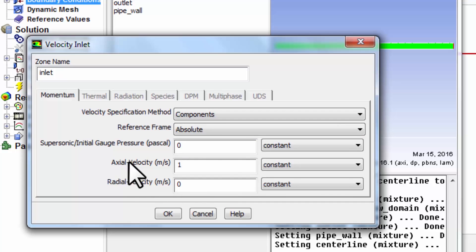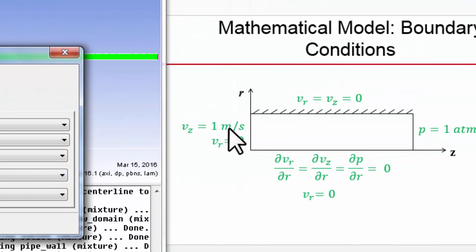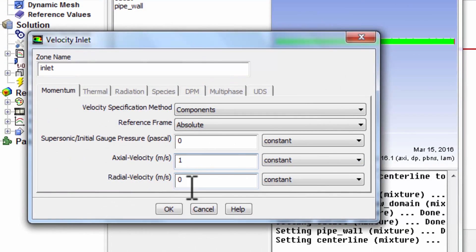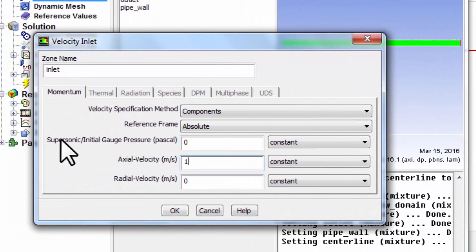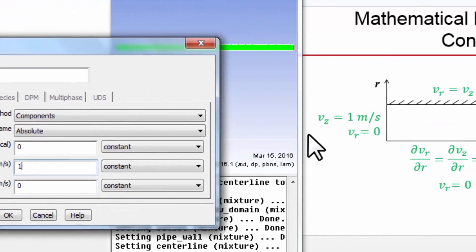The axial velocity—because we have switched to axis-symmetric cylindrical coordinate—it says you have axial velocity and radial velocity. Set the axial velocity to 1. Make sure that's set to 1, zero is the default, so set that value. The radial velocity is 0. Make sure these two values are set right and correspond to this setting.